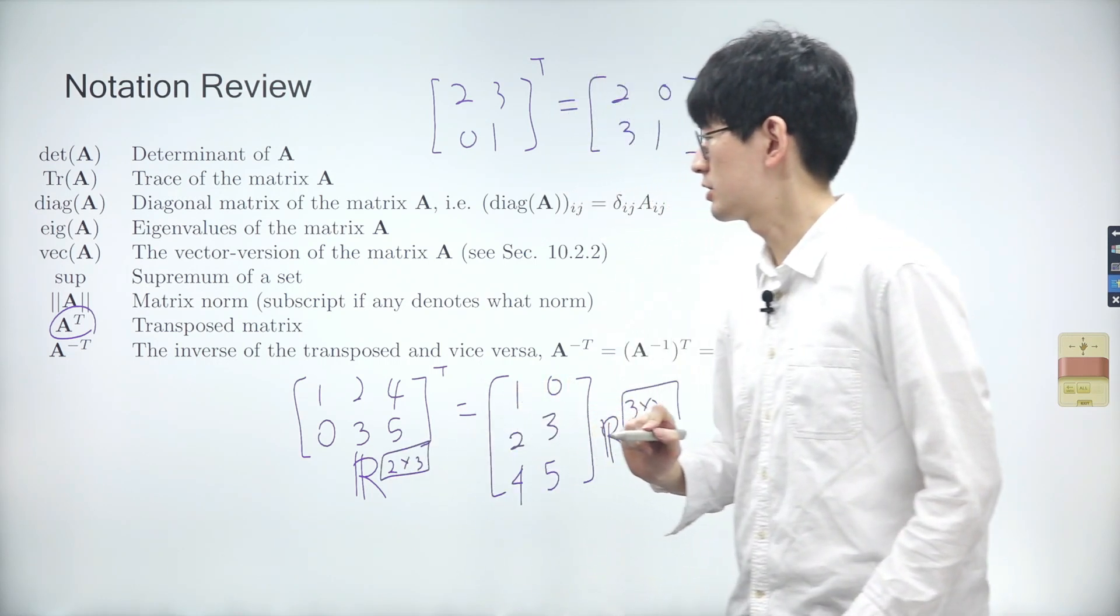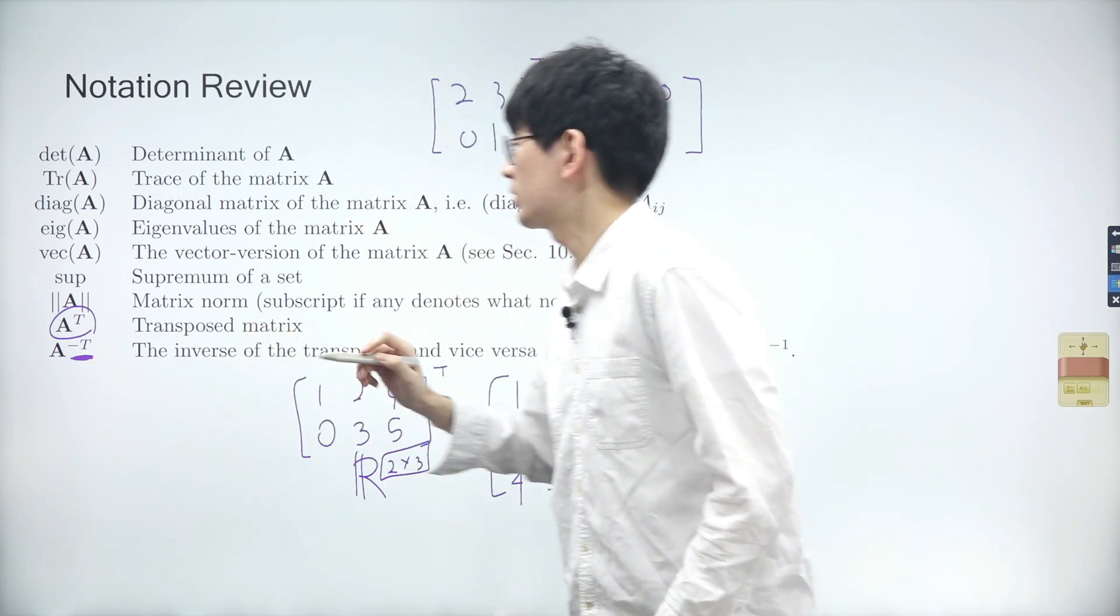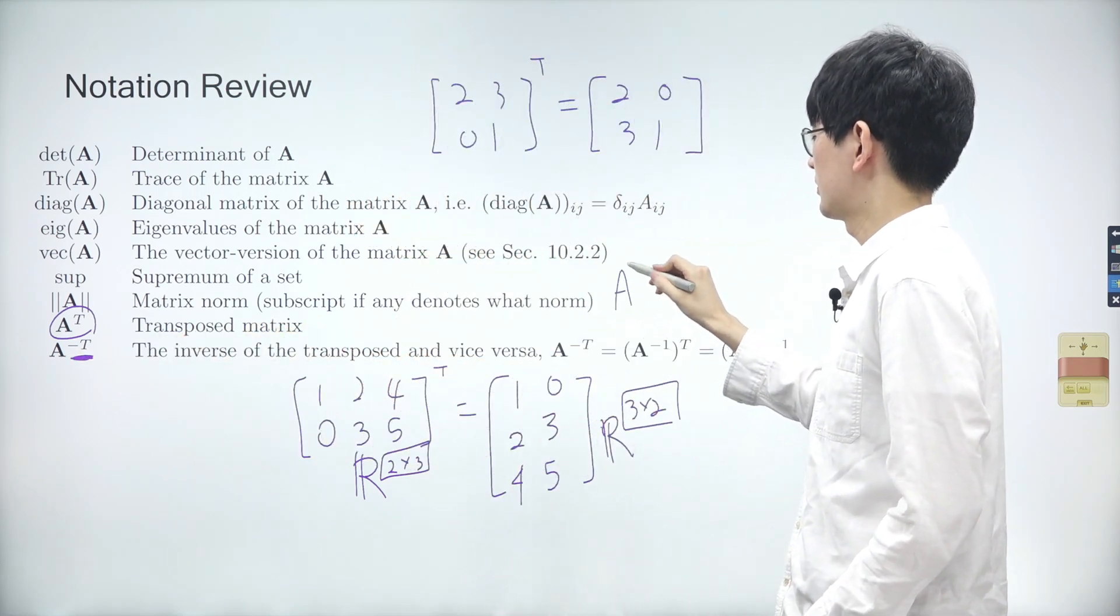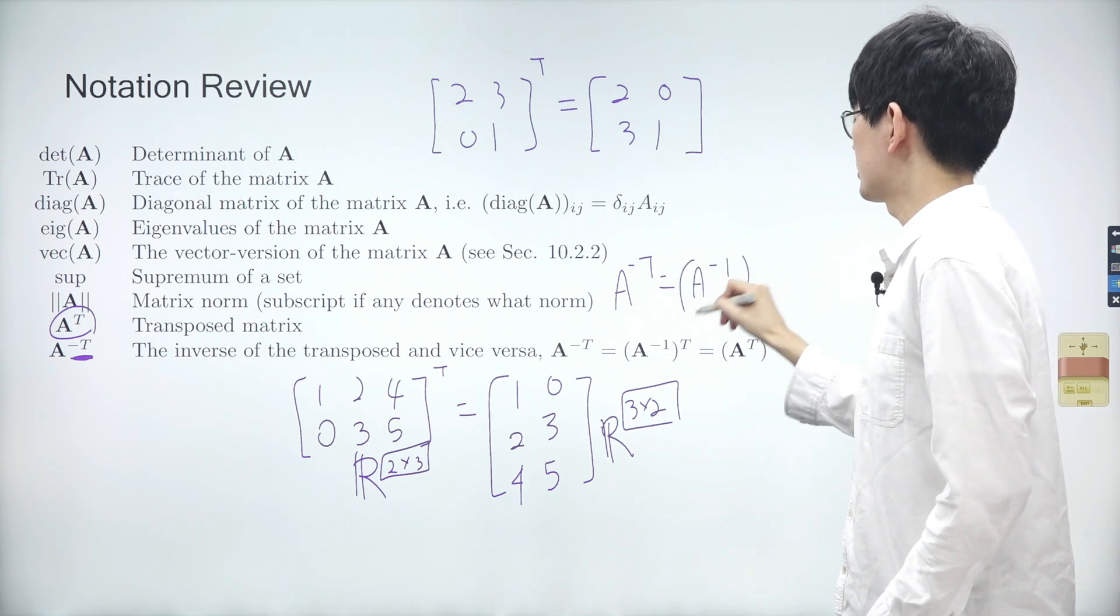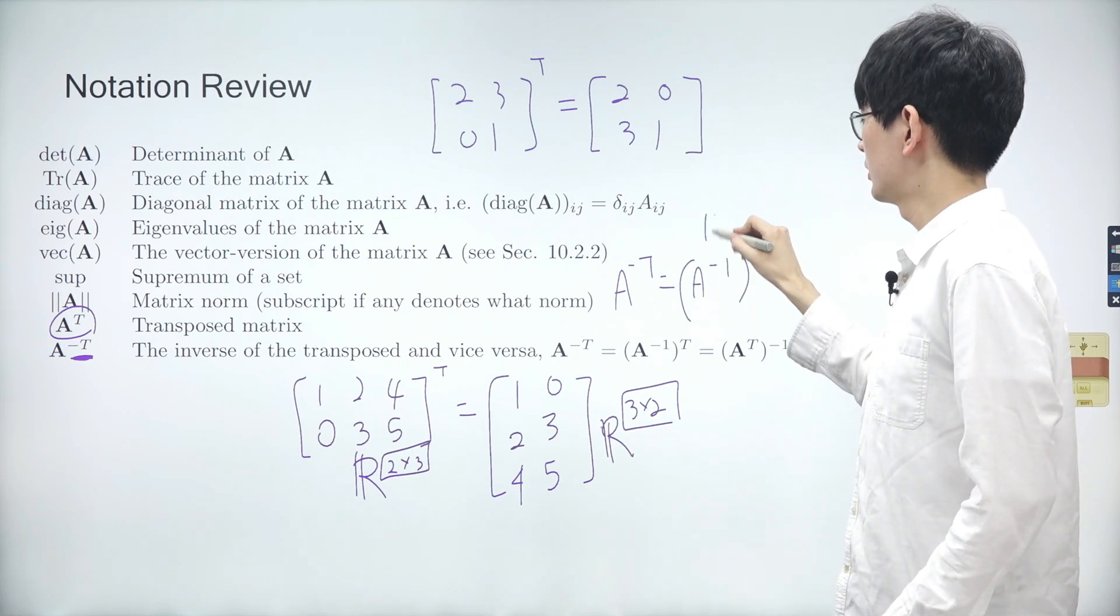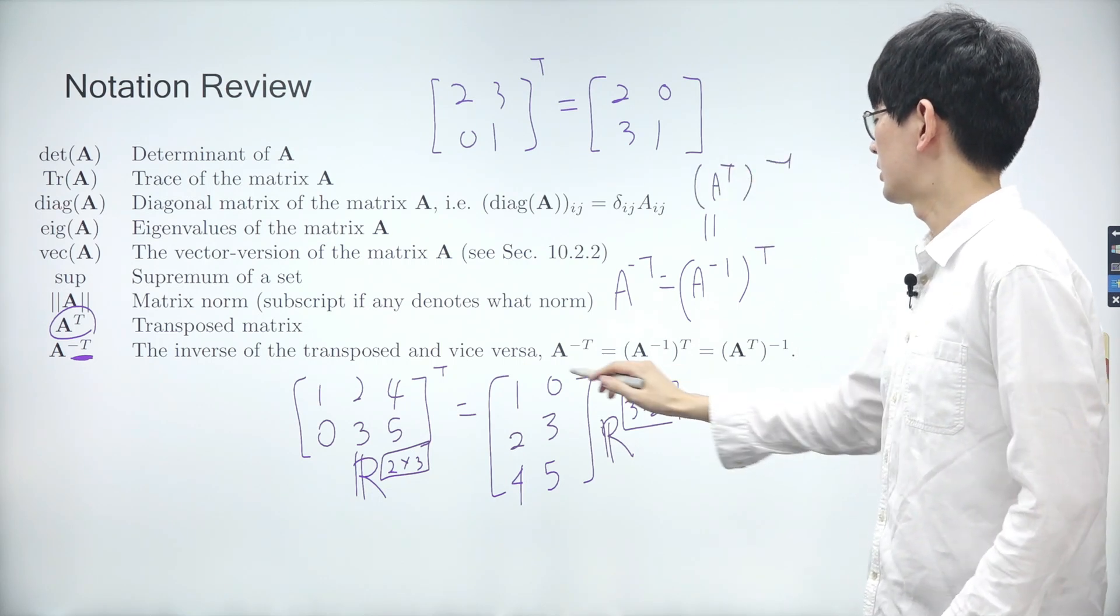In some cases, you might encounter an inverse sign in front of T. A inverse T is the transpose of an inverse matrix of A. Additionally, transposing an inverse matrix is equivalent to inversing a transpose matrix, as described here.